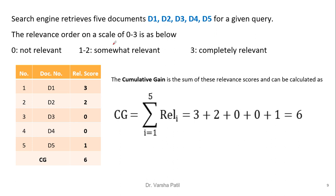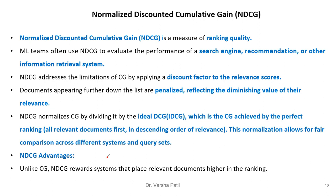For example, a search engine retrieves 5 documents for a given query. Relevance is scored on a scale of 0 to 3: 0 is not relevant, 1 to 2 is somewhat relevant, and 3 is completely relevant. We retrieve 5 documents and their relevance scores are given. We simply take the summation — that is the cumulative gain — and the value is 6. When cumulative gain is higher, we conclude that more relevant documents are retrieved. However, it is not a true measure because it does not consider priority; it simply adds the scores of each document. This limitation is addressed by NDCG.